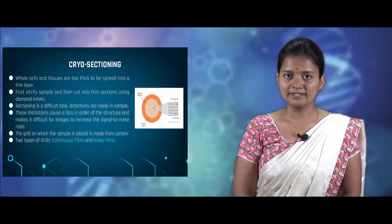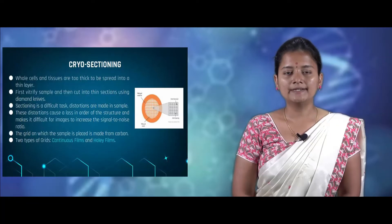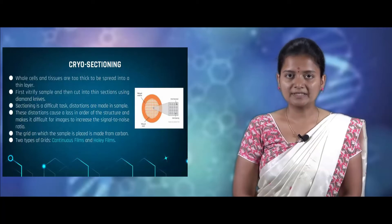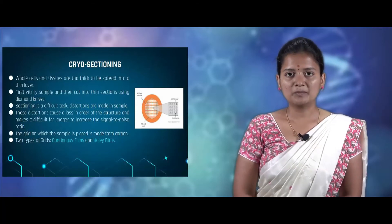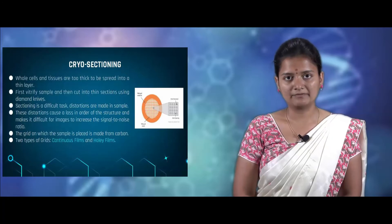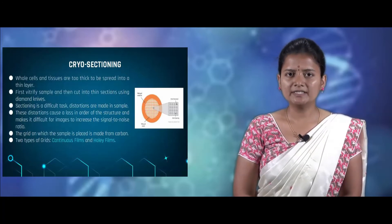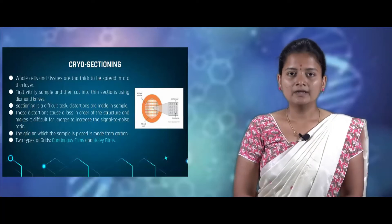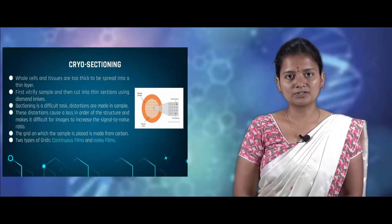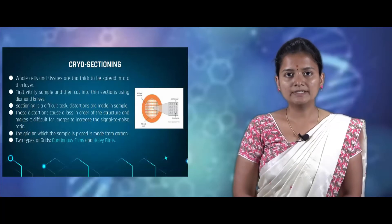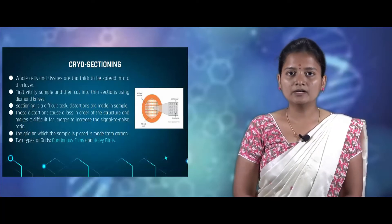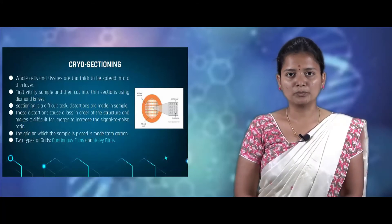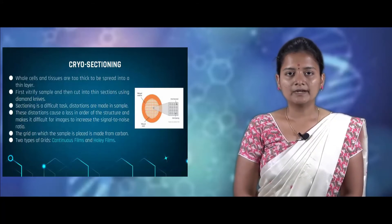The next step in cryo electron microscopy is cryo sectioning. Whole cells and tissues are too thick and difficult to spread as thin layers. Initially, the samples must be vitrified and then cut into thin layers with the help of a diamond knife. Sectioning is a very difficult process since destruction of cells can occur, distortions can lead to loss of molecular structure, and it is difficult to increase the signal-to-noise ratio.